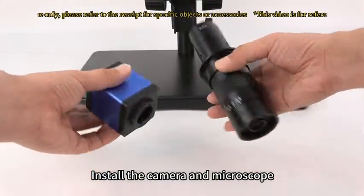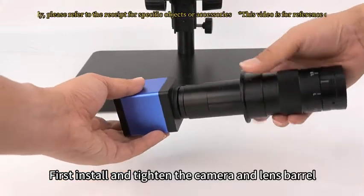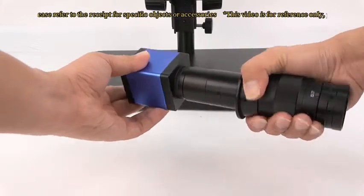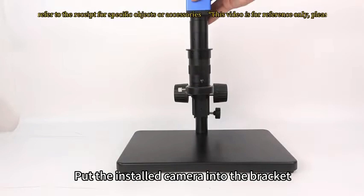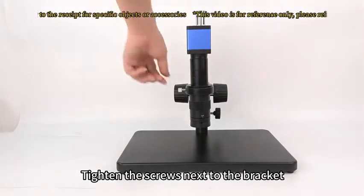Install the camera and microscope. First install and tighten the camera and lens barrel. Put the installed camera into the bracket. Tighten the screws next to the bracket.